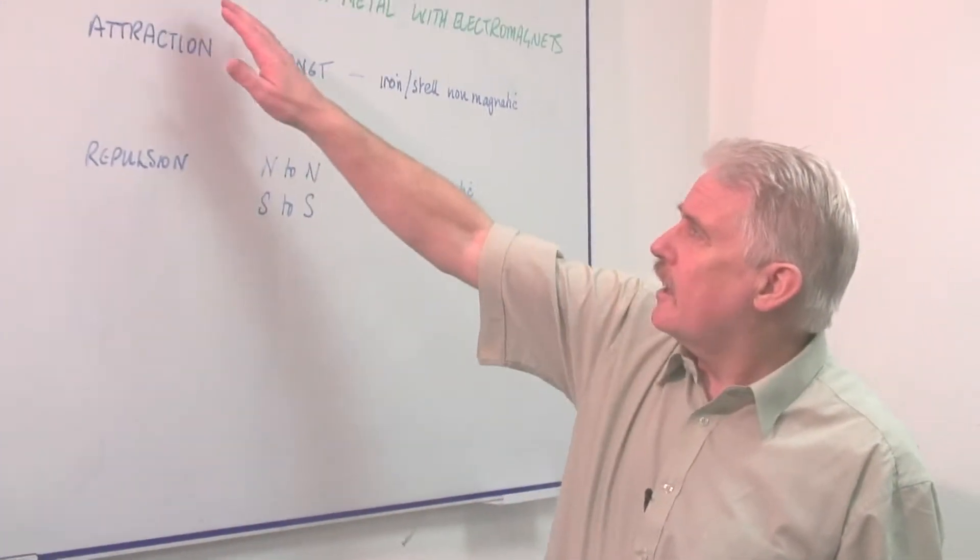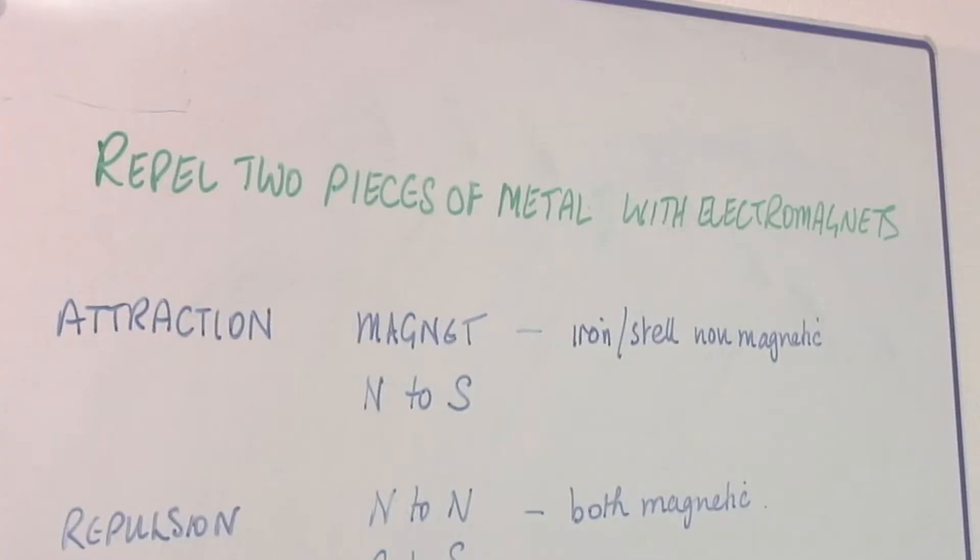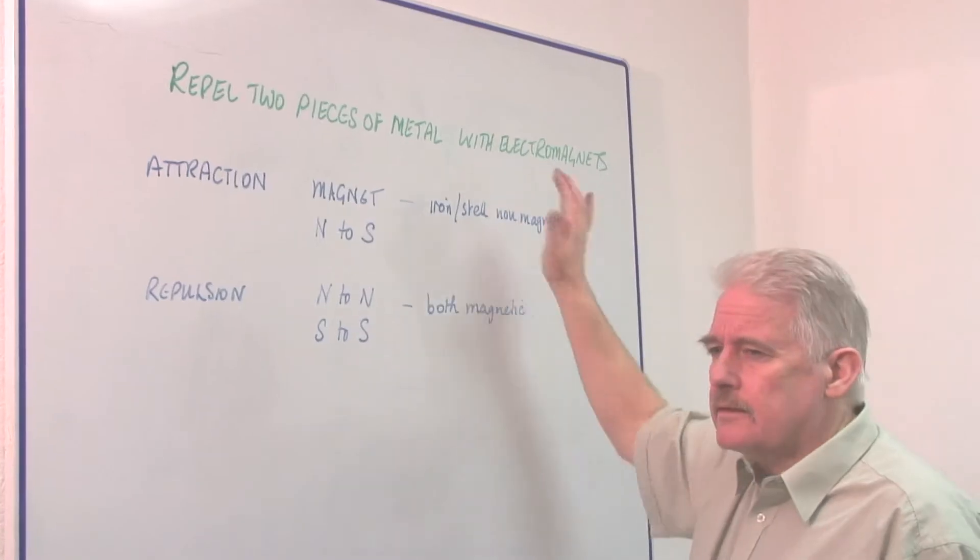Hi, I'm Steve Jones and I'm going to tell you how you can repel two pieces of metal with electromagnets.